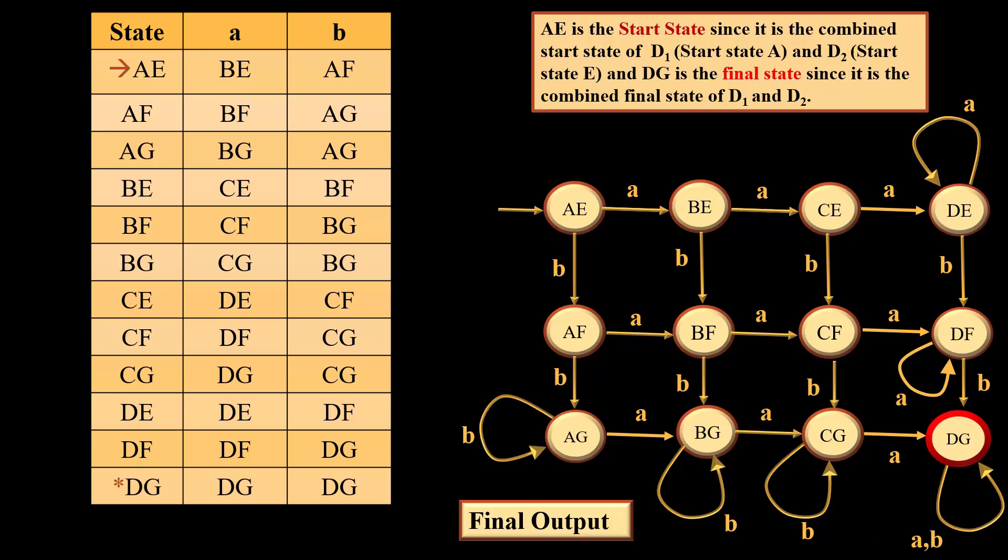Now the point arises: what should be the start state and what should be the final state? As far as start state is concerned, AE will be start state since A was the start state for D1 and E was the start state for D2. Likewise D was the final state for D1 and G was the final state for D2. So DG will be the final state and this is the final output which we get.